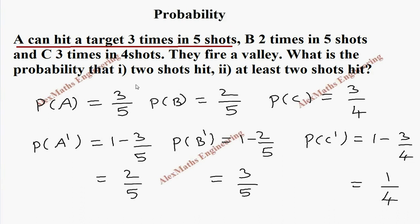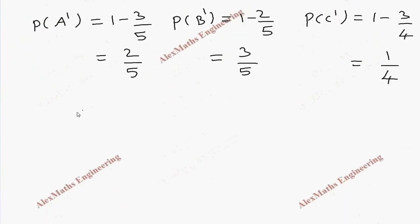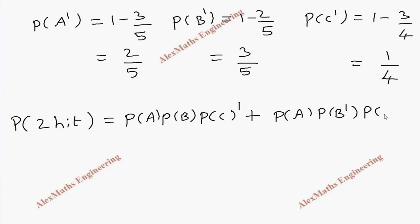they are asking what is the probability that 2 shots hit. It means exactly 2 shots hit. So P of 2 hit equals A and B hit and C does not hit. In the same way, A hit and B does not hit and C hit.